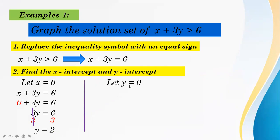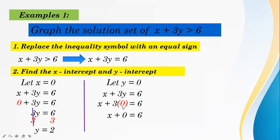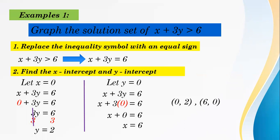Now let y equal 0: x plus 3 times 0 equals 6, so x equals 6. So if x is 0, then y is 2, giving the point (0, 2). If y is 0, then x is 6, giving the point (6, 0). Two points are enough to graph the linear inequality.